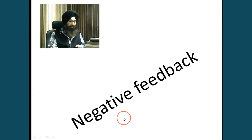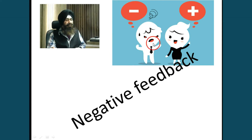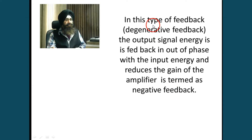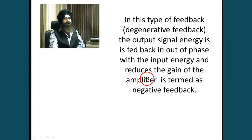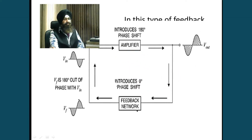Now we come to negative feedback. There are two types of feedback: positive and negative. Negative feedback has many applications while positive feedback has only one application. Negative feedback is also called degenerative feedback. The output signal is fed back out of phase with the input — as the name implies, negative — and it reduces the gain of the amplifier.